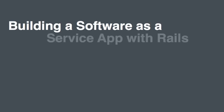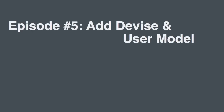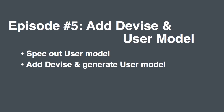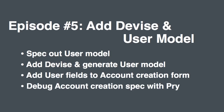Welcome to the fifth episode of building a software as a service application with Rails. Today we are going to add Devise and use it to generate a user model. The steps we'll take are: speccing out the user model, adding Devise and having it generate a user model, adding user fields to the account creation form, and finally debugging the account creation spec with Pry.